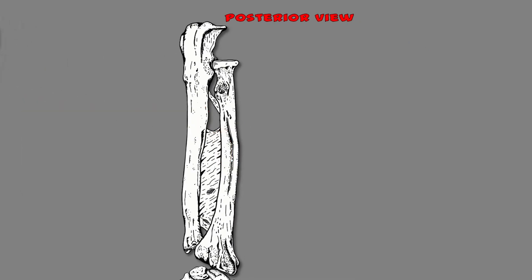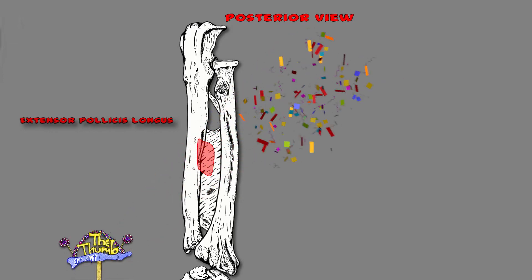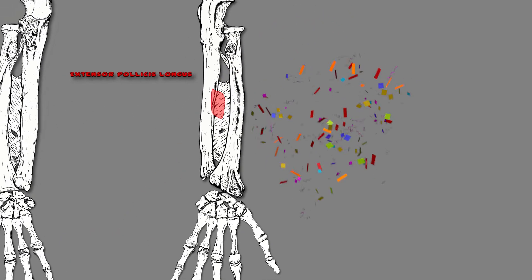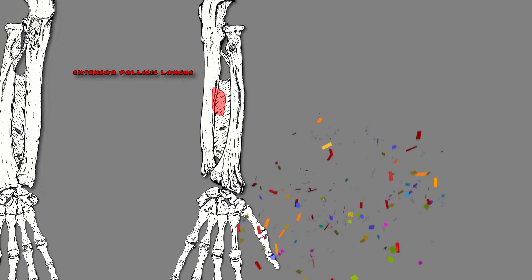Next muscle: the extensor pollicis longus. It originates on the middle one-third of the posterior ulna and the interosseous membrane. It's a longus muscle, which means it's long, and it's a pollicis muscle, so we know it inserts on the first digit — the distal phalange of the first digit to be exact.